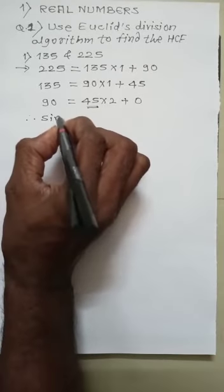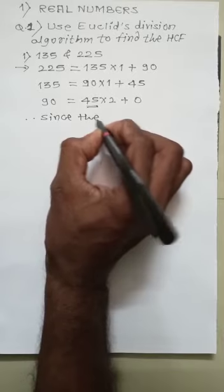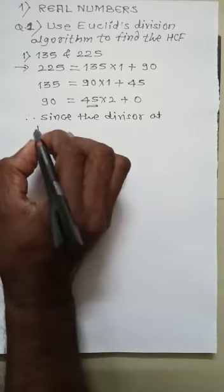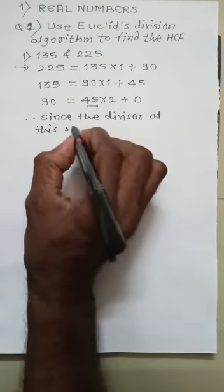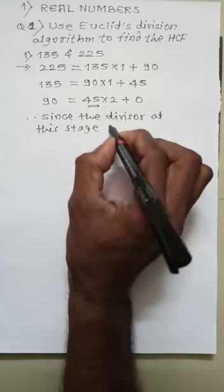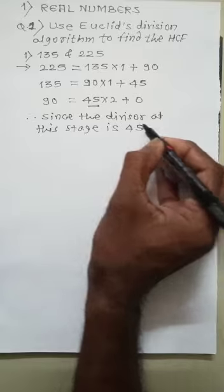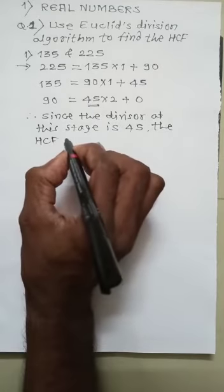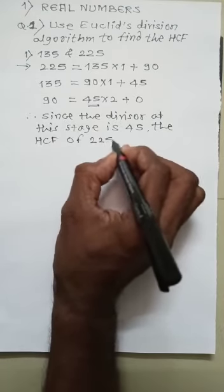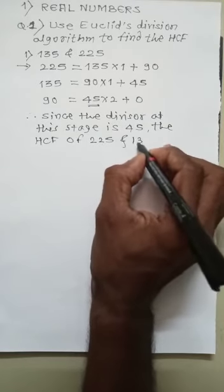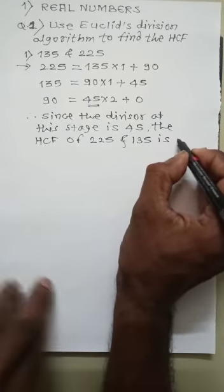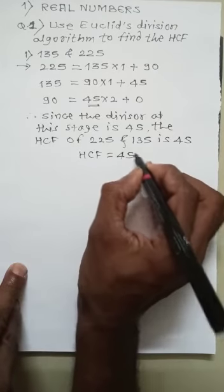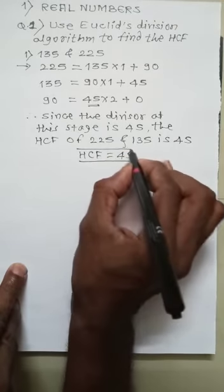Since the divisor at this stage is 45, the HCF of 225 and 135 is 45. Therefore, HCF equals 45. This is our final answer.